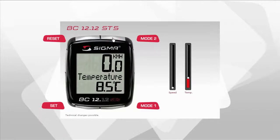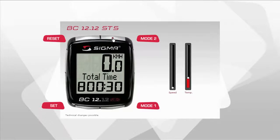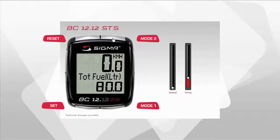The total values — such as the total distance, total trip time, and total fuel saving — which are hidden during the trip, are not deleted and can be displayed after each trip by pressing Mode 2.